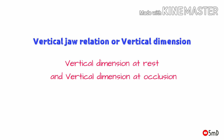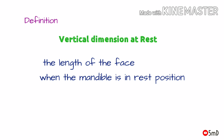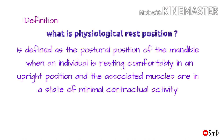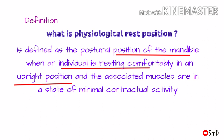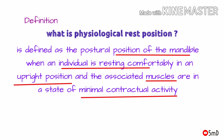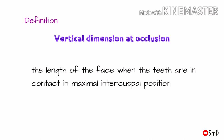There are two types of vertical dimension to be recorded: vertical dimension at rest and vertical dimension at occlusion. Vertical dimension at rest is the length of the face when the mandible is in rest position. Physiological rest position is defined as the postural position of the mandible when an individual is resting comfortably in an upright position and the associated muscles are in a state of minimal contractual activity — in simple words, when the patient is at ease, comfortably seated, and the muscles are also relaxed. Vertical dimension at occlusion is the length of the face when the teeth are in contact or in maximal intercuspal position.